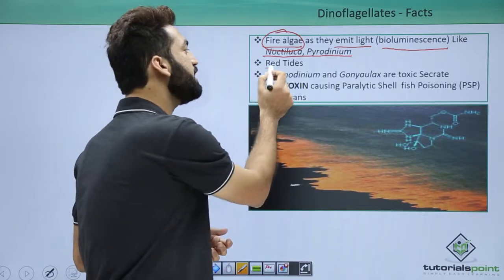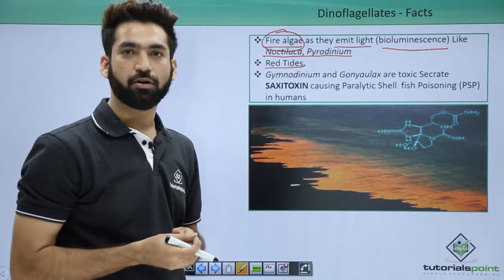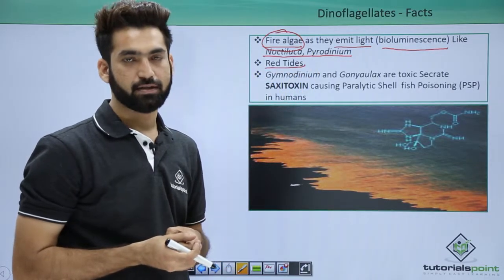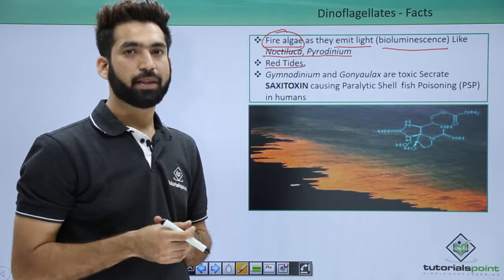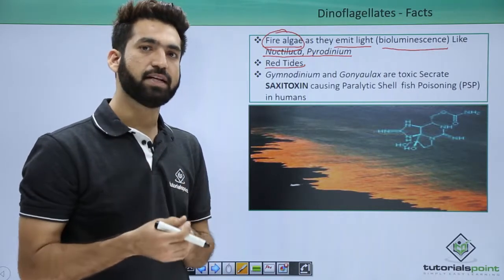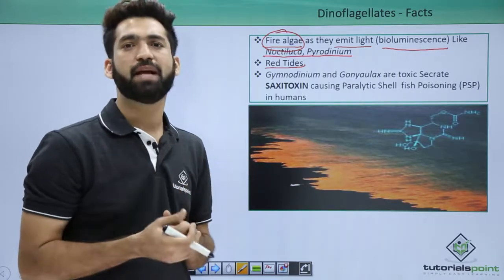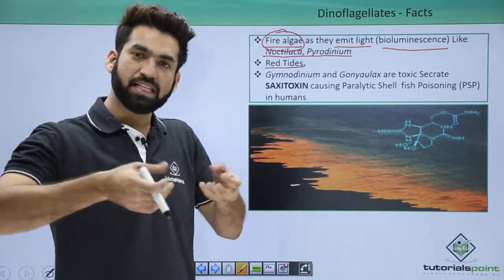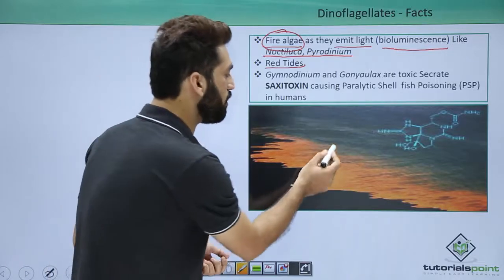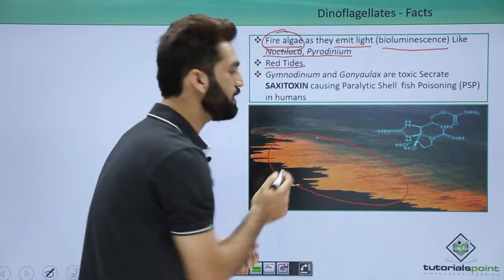I've also told you that dinoflagellates are the main cause of red tides. Remember this because you have dinoflagellates coming in different colors. The red dinoflagellates multiply very fast, and when they multiply fast they become the cause in the sea for red tides.